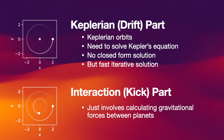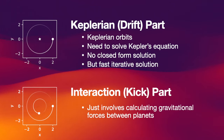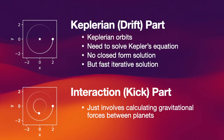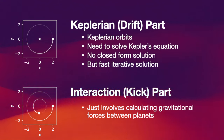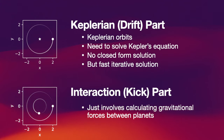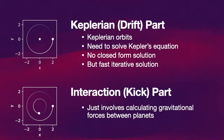So this distinction between the Keplerian part and the interaction part is the main idea behind the Wisdom-Holman integrator. The Keplerian part, sometimes also referred to as the drift part or the drift step, involves solving for Keplerian orbits. To solve a Keplerian orbit, we need to solve Kepler's equation. Because there is no closed-form solution available, we need to do this iteratively. There exist different fast iterative solutions to Kepler's equation, and we need to use some of those in WHFAST.